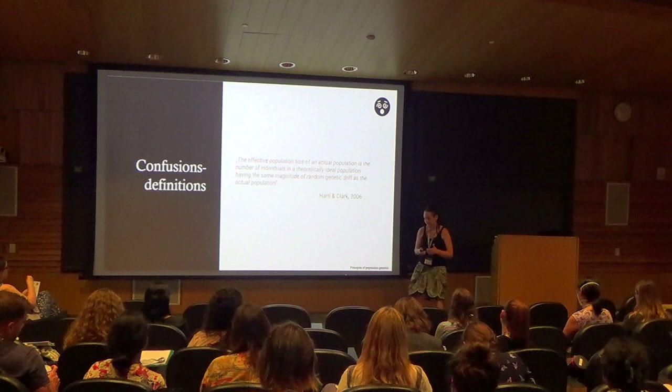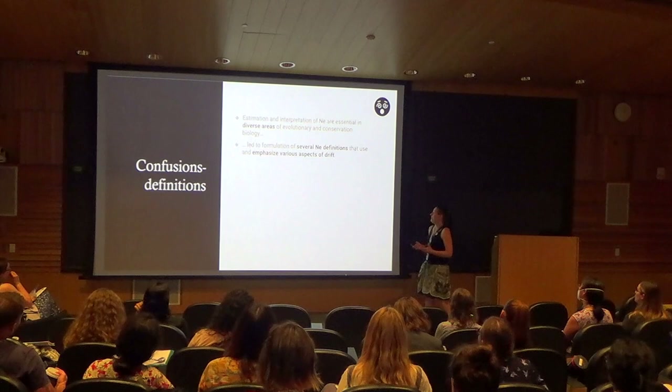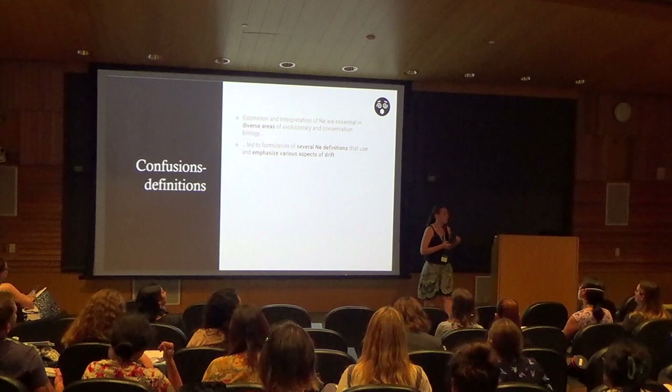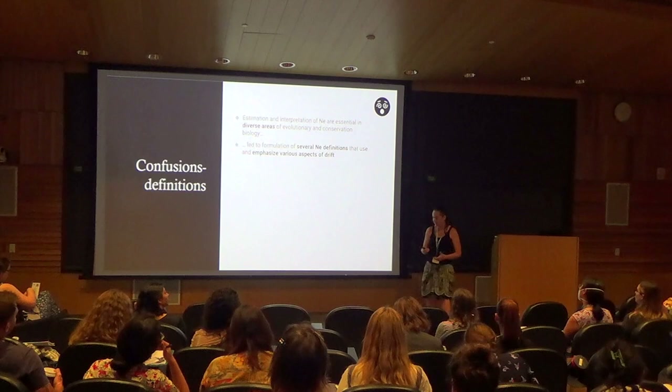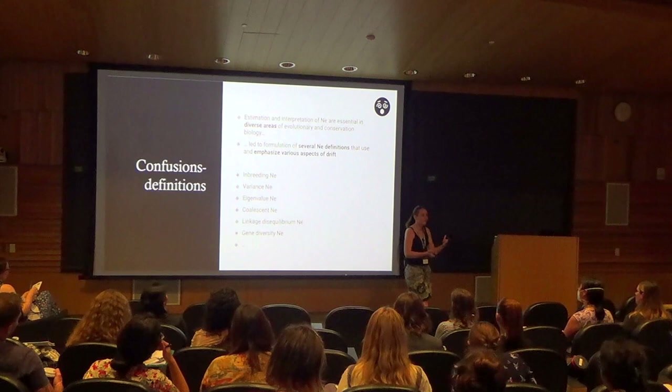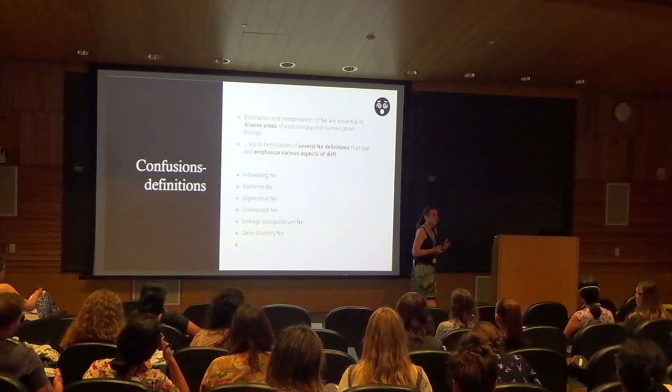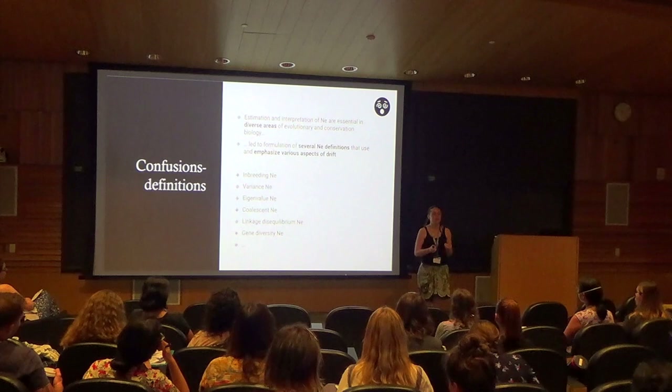Estimation and interpretation of Ne is essential in diverse areas of evolutionary biology and conservation genetics, and also leads to the formulation of several Ne definitions that emphasize various aspects of drift. So apart from having one textbook definition, we have several ones: inbreeding Ne, variance Ne, eigenvalue Ne, coalescent Ne, linkage disequilibrium Ne, gene diversity Ne, and many more. It is really important to understand that these different definitions emphasize different aspects of drift.